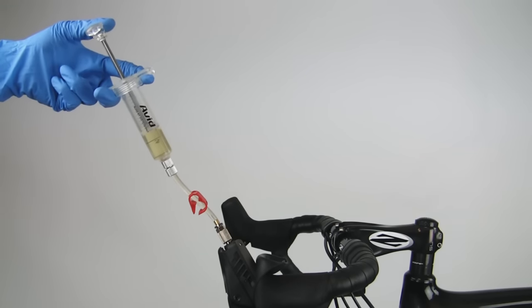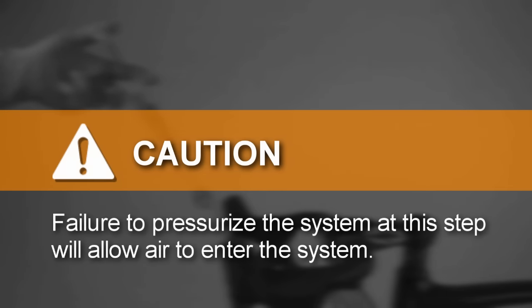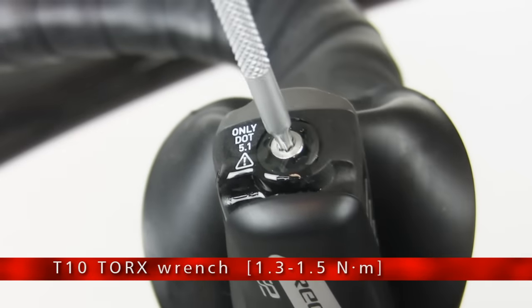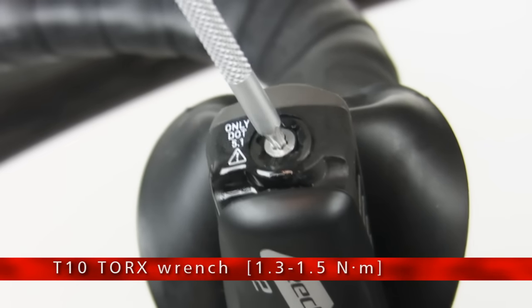Apply a small amount of pressure to the syringe plunger. Failure to pressurize the system at this step will allow air to enter the system. Remove the syringe. Reinstall the bleed screw into the pool of fluid in the bleed port.